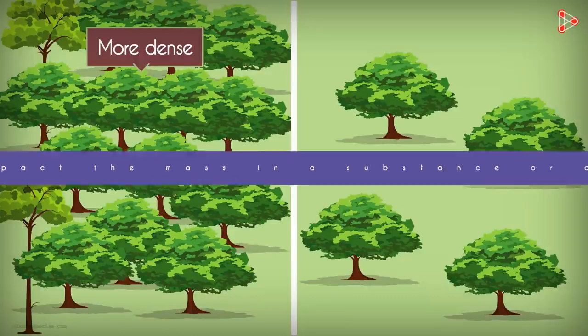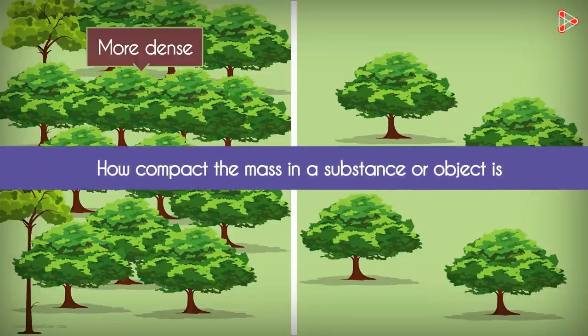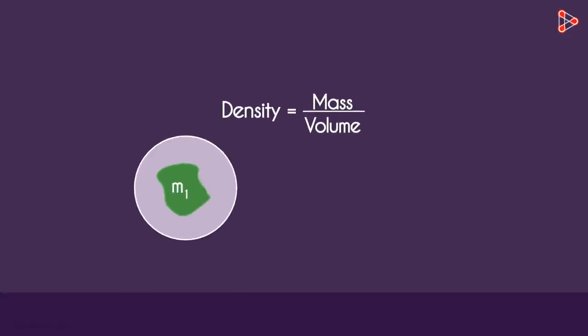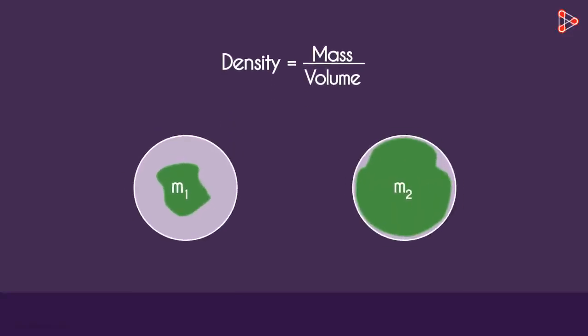Density is simply the measure of how compact the mass in a substance or object is. If we have to go by its scientific definition, we would say that it's mass per unit volume. In short, it tells us how much mass exists in a given volume.